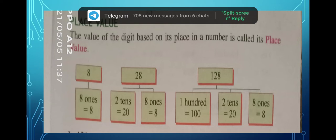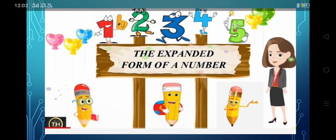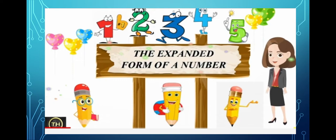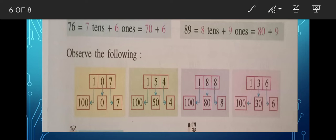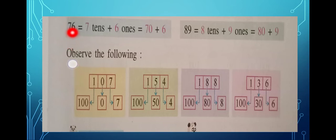Now let us learn about the expanded form of a number. Writing numbers in terms of hundreds, tens, and ones is called the expanded form. For example, 76 — six is in the ones place, so six ones; seven is in the tens place, so seven tens. That means seven tens plus six ones, or 70 plus 6. Both are correct.